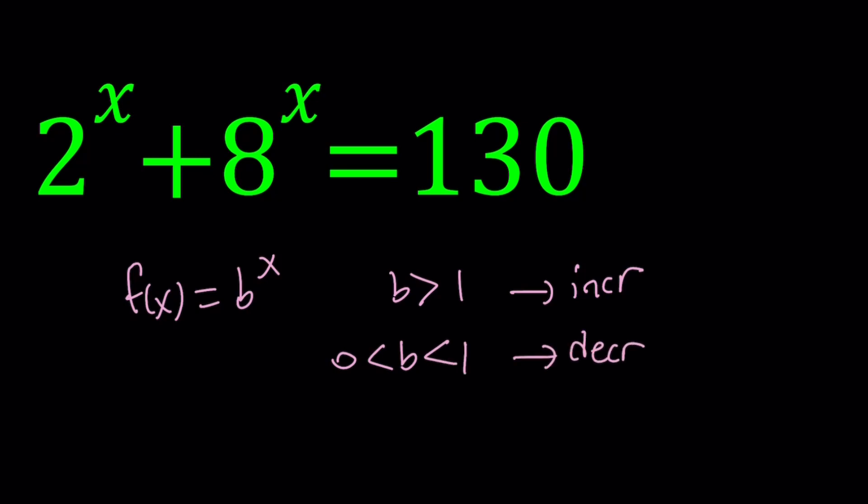Let me give you an example for both. For example, if you have y equals 1 half to the power x, this is going to be decreasing, and y equals 3 to the power x is going to be increasing. So one of the graphs is going to look like this, and the other graph is going to look like this.